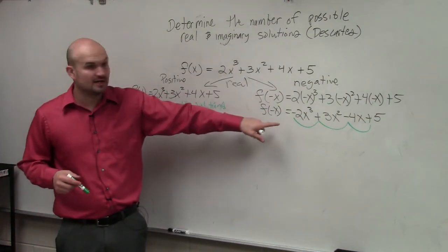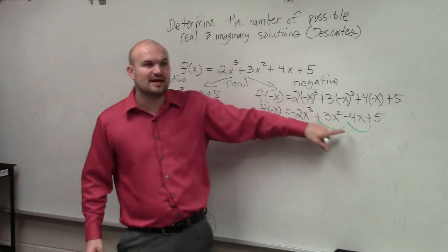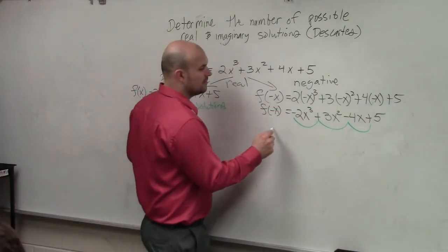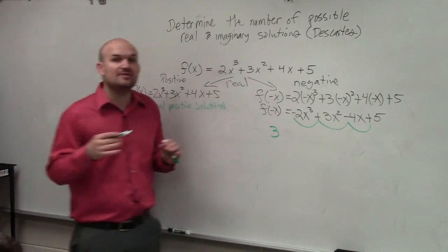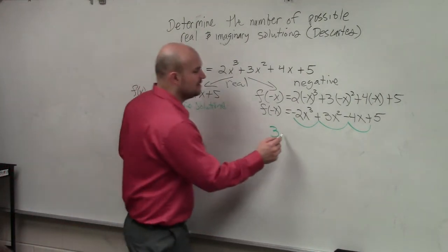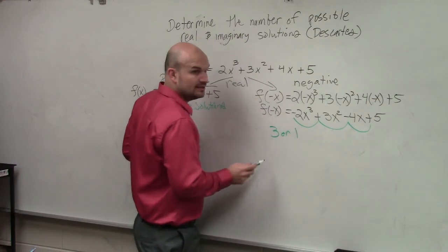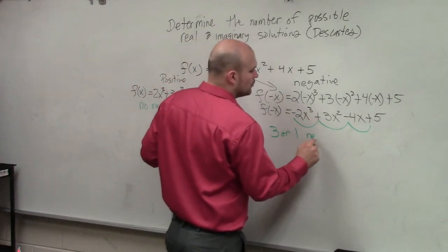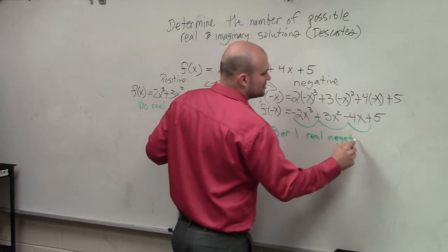So you guys can see here, how many negative solutions could we have? Three. Three. So what we did is we take three, and then you always subtract an even number. So it's going to be three or one, even number would be two, right? So three or one real negative solutions.